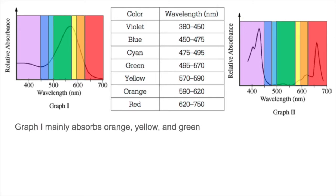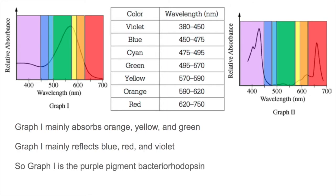Looking at graph 1, you can see that the highest absorbance is mainly in orange, yellow, and green, and the lowest seems to be blue, red, and violet. And those are the colors that are reflected. So when you look at this, you're going to mainly see blue, red, and violet. So we can deduce that graph 1 is the purple pigment bacteriorhodopsin.